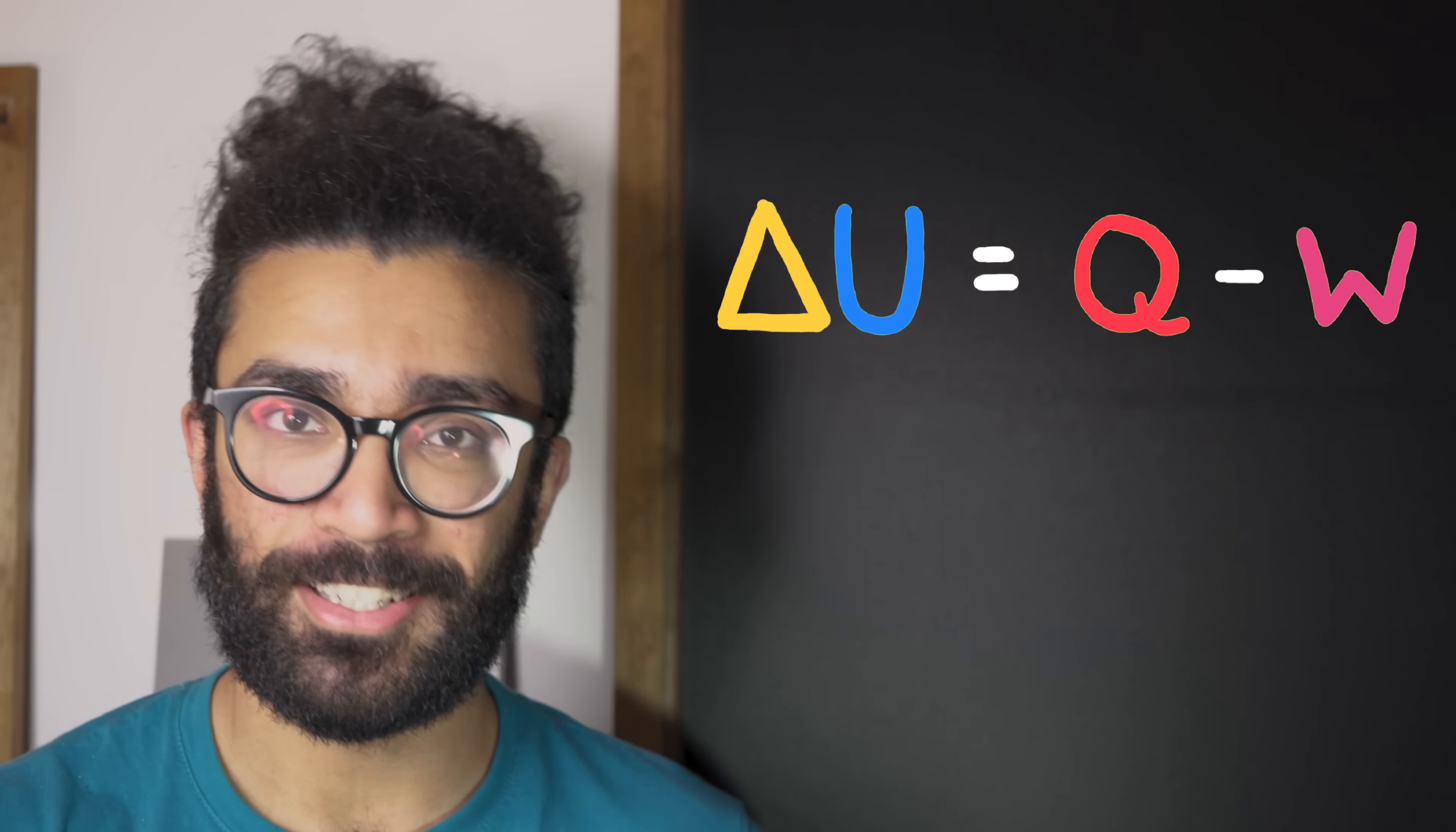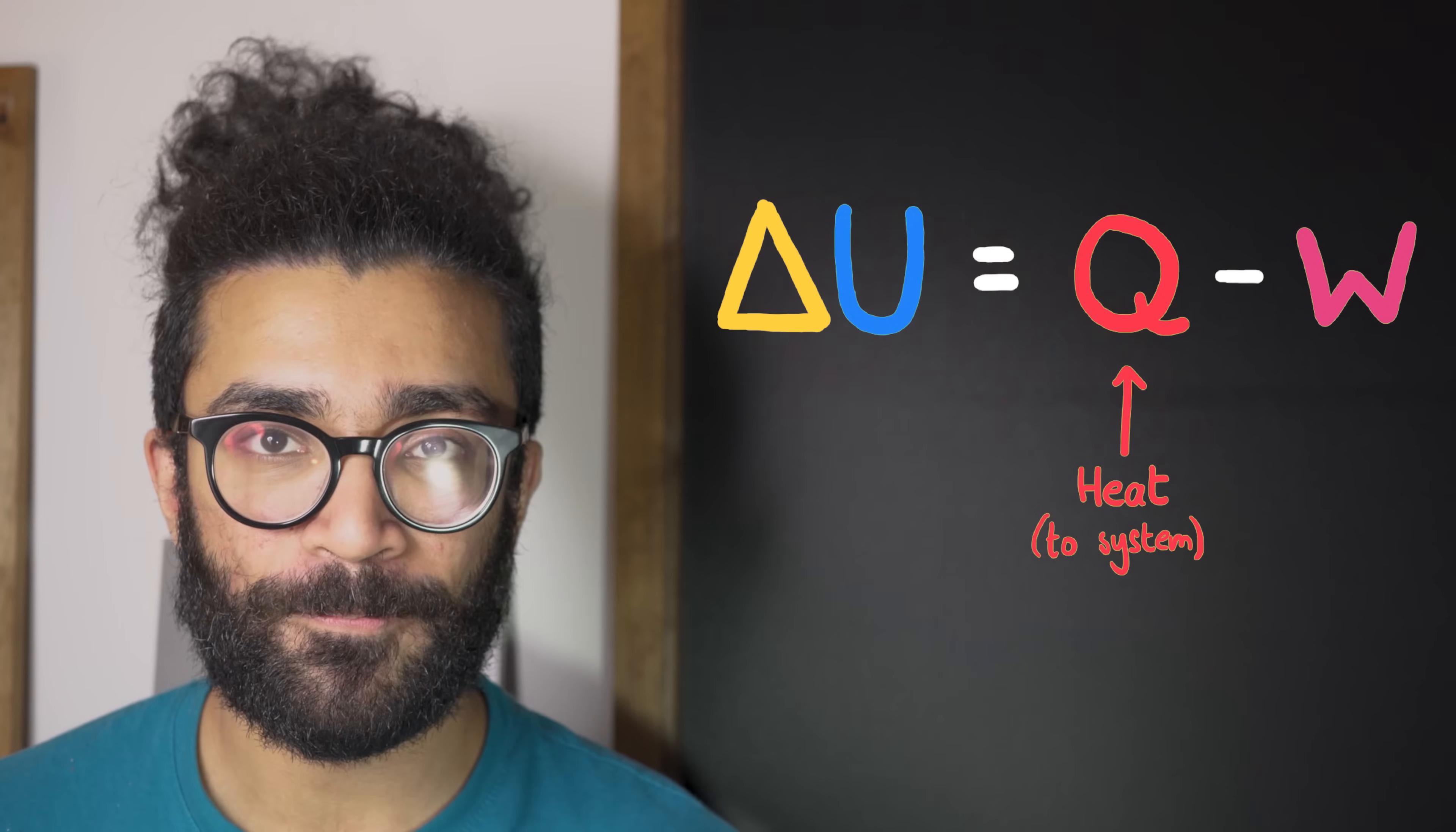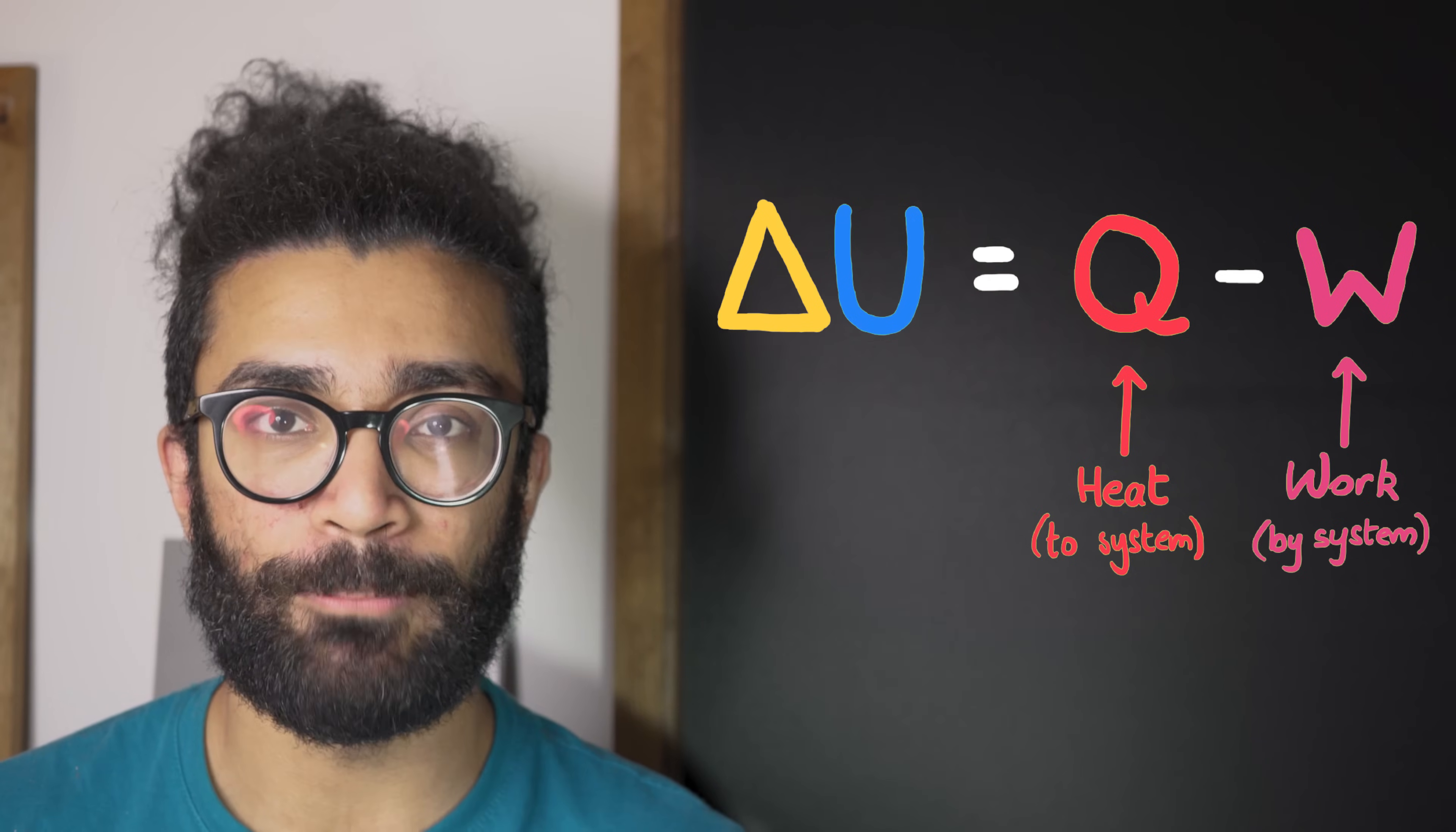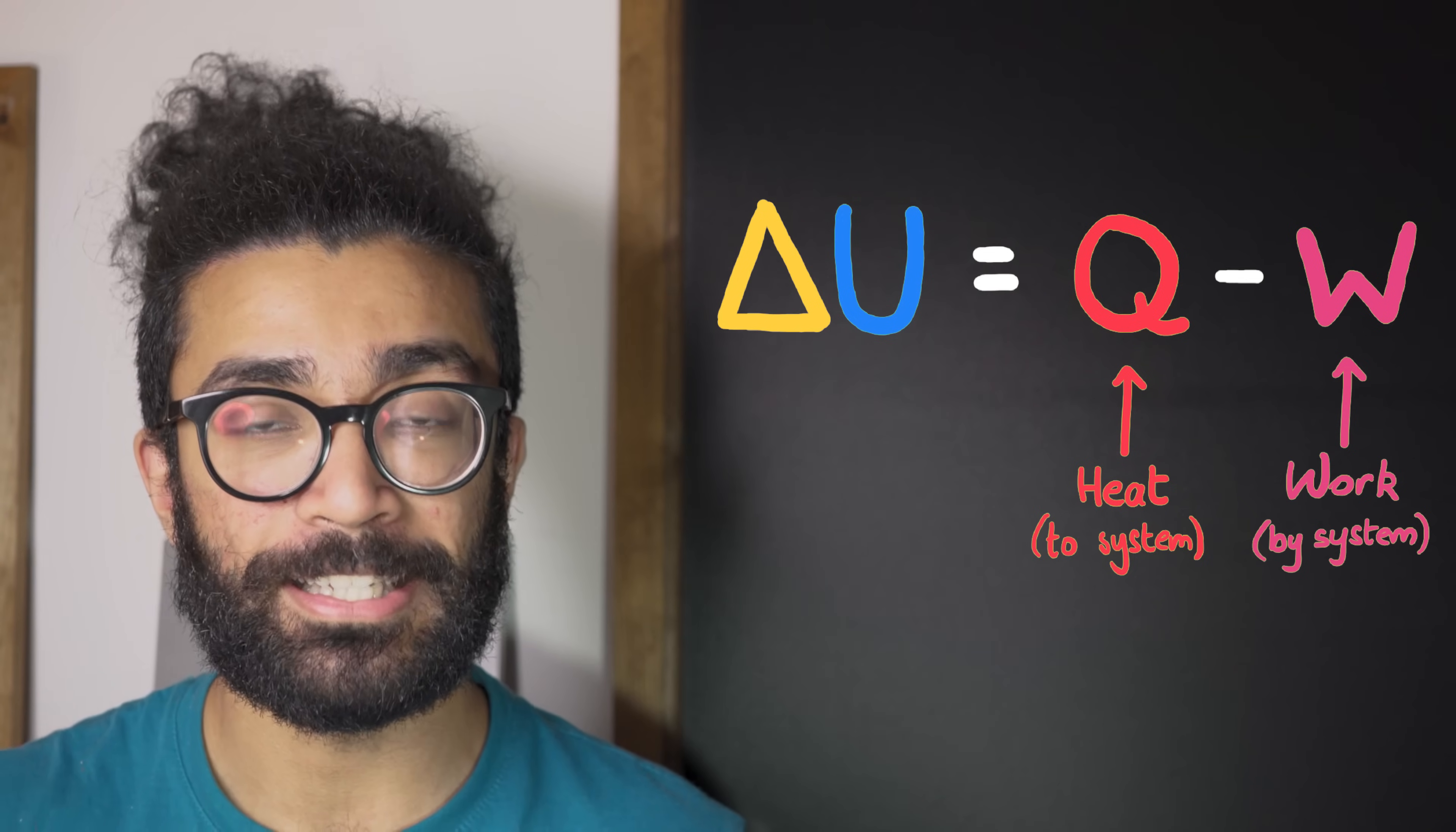Now, we've already talked a little bit about the sign conventions here. We've defined Q as the energy transferred to our system due to heating, whereas we've defined W as the energy transferred from our system due to work done by the system on its surroundings. Some people find this convention a bit strange, and so choose to define the work term the other way around.